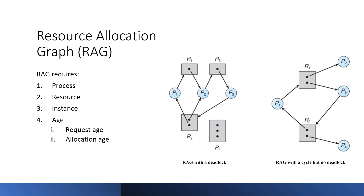Now we will determine whether this particular system is in a deadlock. How can you tell this? If the particular system has a cycle, that is the way you can tell. You look for a cycle in the resource allocation graph — cycle number one, for example. If the system has a cycle, we examine whether it leads to deadlock.